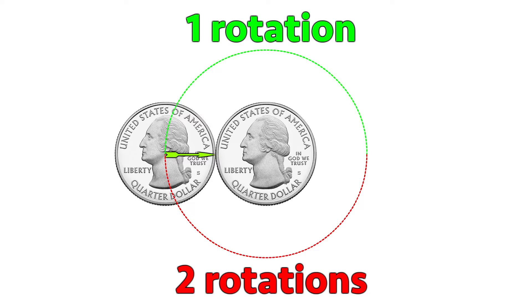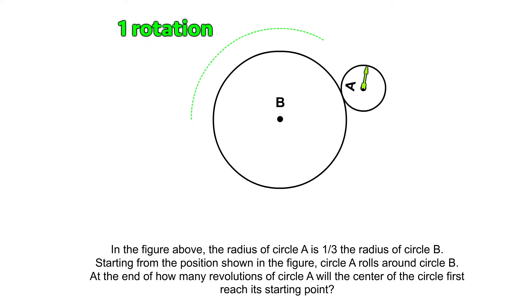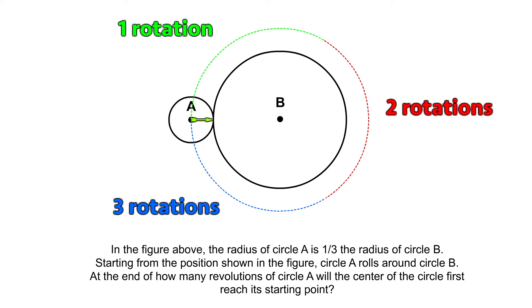We can look back at the SAT question and see that the number of times that the radius touches the circle is three. But you may argue that the arrow touching the circle is not the same as a circle rotation.